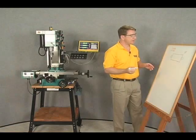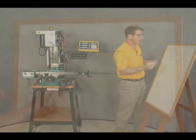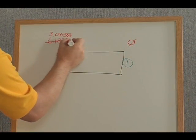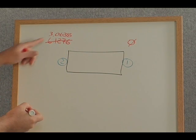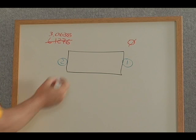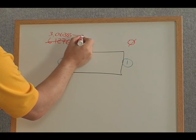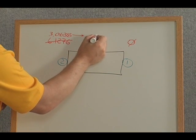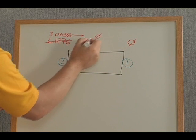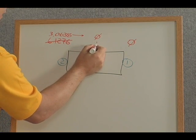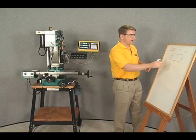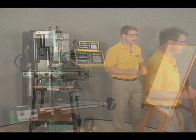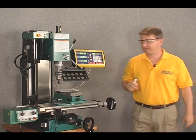So now we've established our waypoint or point number two. Instead of 6.1276 it actually reads 3.0638. So if we go to the right, move the machine to the right to the point at which it zeroes out, that will establish for us the exact halfway point between these two distances. So let's go ahead and do that.